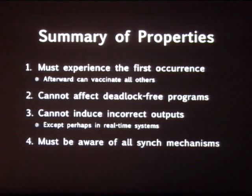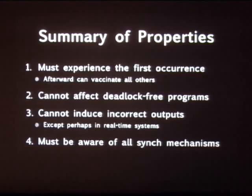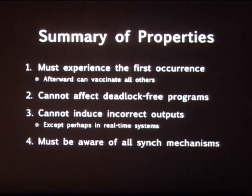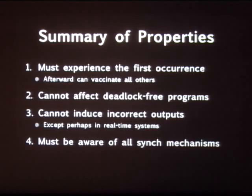Let me summarize. DEMUNIX requires that the program experience the first occurrence of the deadlock in order to develop immunity against it — that's a cost we have to incur. DEMUNIX will not cause deadlock-free programs to do anything different, because no deadlocks means no signatures. It also cannot induce a program to produce incorrect outputs unless the program is real-time, since all DEMUNIX does is choose a different schedule. Finally, DEMUNIX has to know about all synchronization mechanisms — including homegrown busy-wait loops in combination with pthread mutexes.